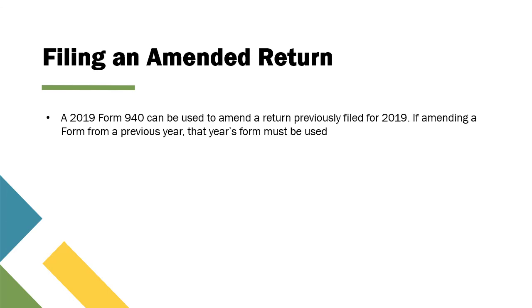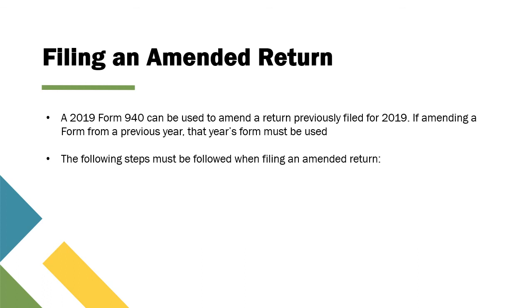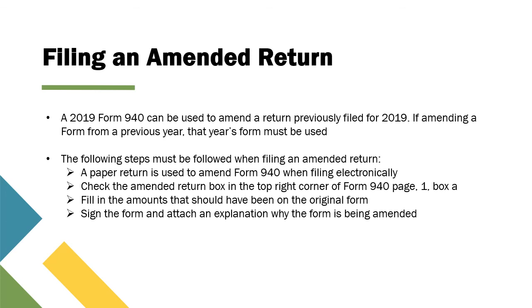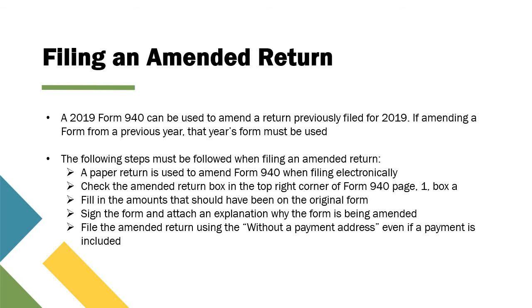Employers also have the option of filing an amended return. A 2019 Form 940 is used to amend a return previously filed for 2019; if amending a form from a previous year, that year's form must be used. Steps include: use a paper return to amend Form 940 when filing electronically; check the amended return box (box A) in the top right corner of page 1; fill in the amounts that should have been on the original form; sign the form and attach an explanation; and file using the without-a-payment address, even if a payment is included.